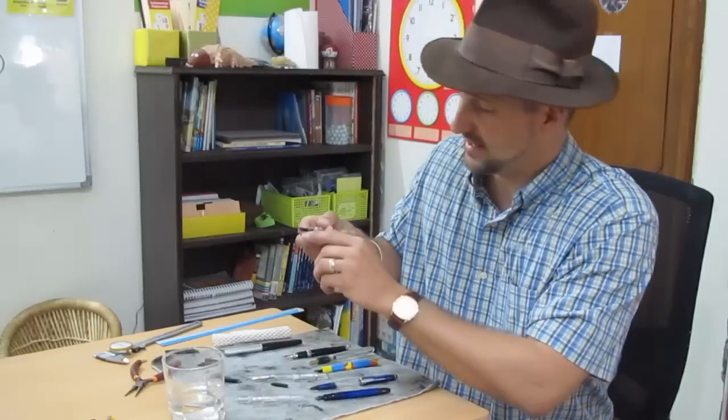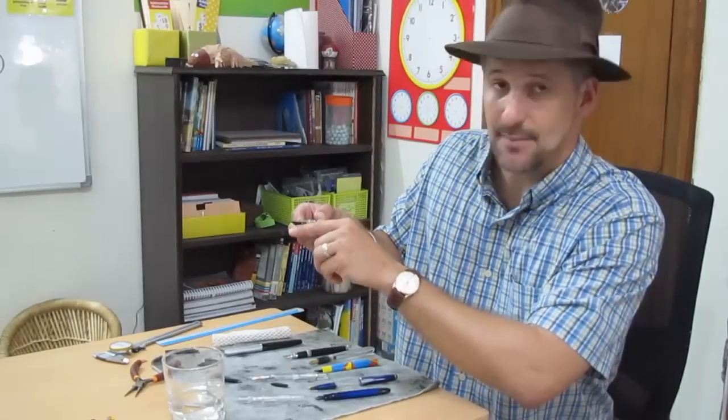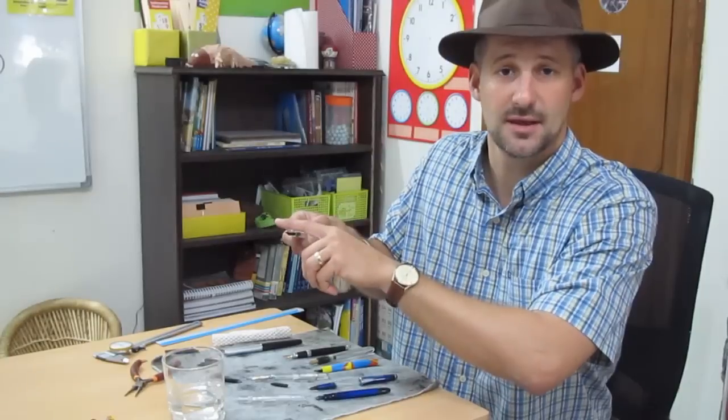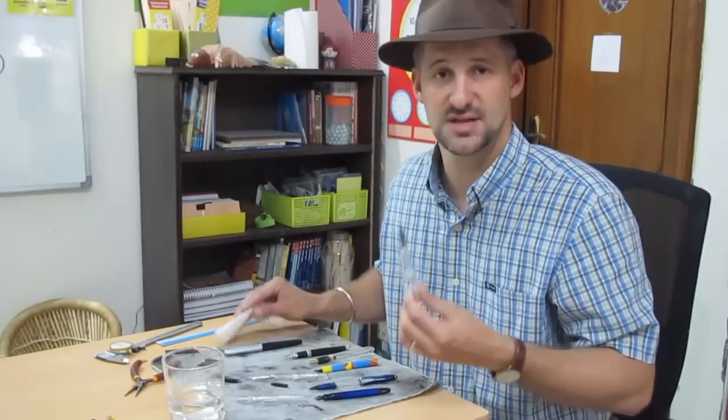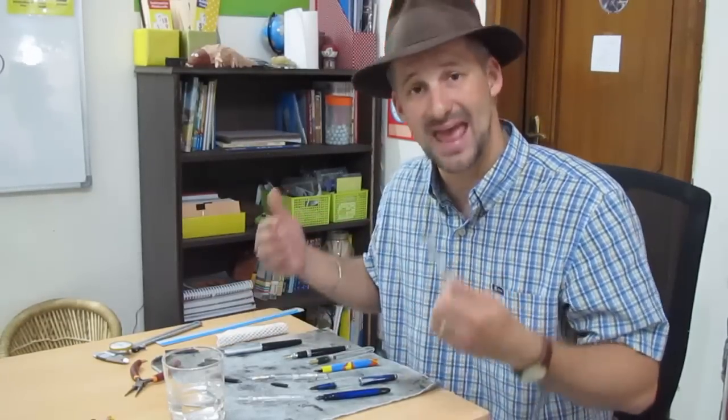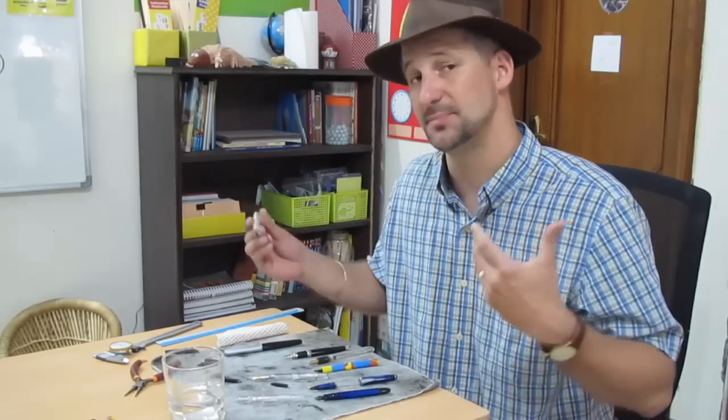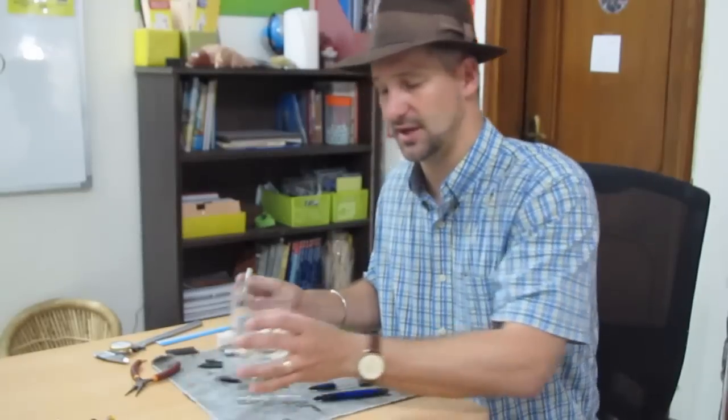Another thing you might find is that the feed has a gap between the feed and the nib. Either one of these problems can be fixed easily if you're using an ebonite feed pen. What you'll do is simply heat set the feed. There's a video on how to do this, so I'll just discuss it briefly here.